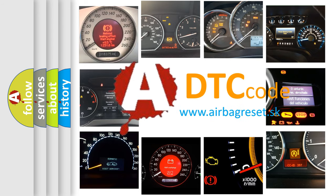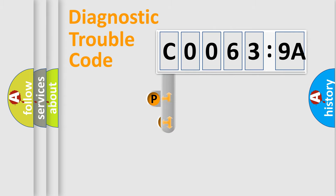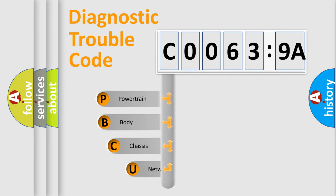We divide the electric system of automobile into four basic units: Powertrain, Body, Chassis, and Network. This distribution is defined in the first character code.